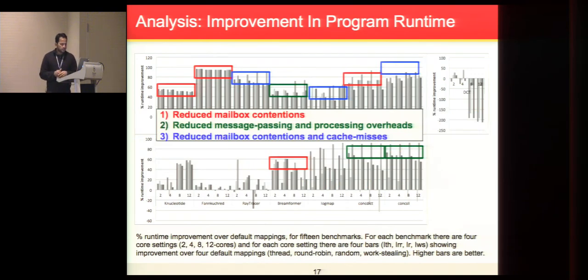To further analyze our result, we categorized our results into three categories based on the intuition of why we see the performance. The first category says in these programs, we see the performance improvement because of reduced mailbox contention. Similarly, for the second category, we see the improvement due to reduction in message passing and processing overhead.